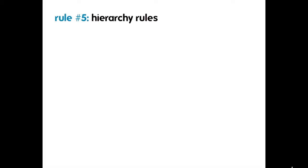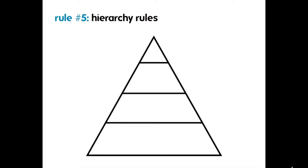Rule number five is that hierarchy rules. It's important to acknowledge that some information in your research is more important than other data points. Essential information should be featured most prominently on your poster. As a general rule, the bigger the text or the header, the more important the information should be. It's impossible to include everything in your research on the poster, so much like a pyramid, filter information so the most prominent and important information is on top.